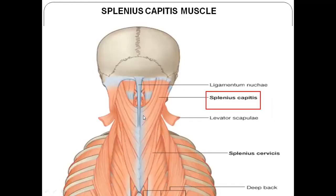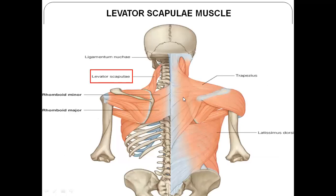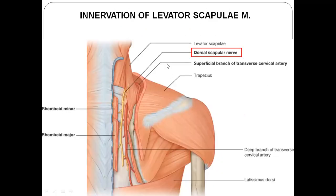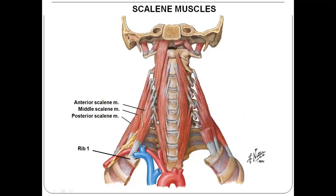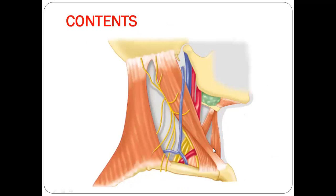The floor muscles of the posterior triangle include muscles of the back of the neck: splenius capitis, splenius cervicis, and levator scapulae — which is innervated by the dorsal scapular nerve. The scalene muscles are scalenus anterior, scalenus medius, and scalenus posterior.